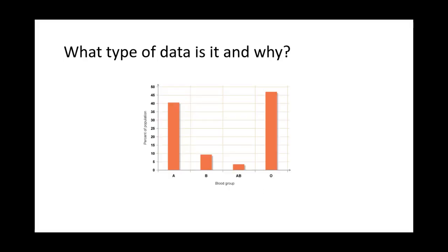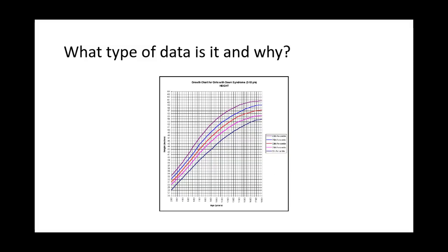Here's an example of some data - if you want to pause the video and have a go at identifying which type it is. The answer is this is discontinuous data because there are distinct categories and no intermediate values, and it's represented as a bar chart. Whereas this one is continuous data with intermediate values, represented using a line graph.